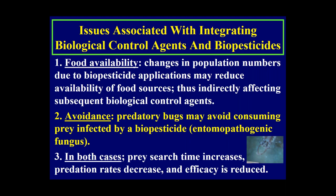There are issues with integrating biological control agents with pesticides. First, food availability: biopesticide applications may reduce the pest population so dramatically that there aren't enough prey to sustain parasitoid and predator populations. Second, avoidance: predatory bugs may avoid consuming prey infected by a biopesticide. That's not necessarily bad — the pest will die from the biopesticide anyway — but prey search time increases, predation rates decrease, and overall efficacy may be reduced.